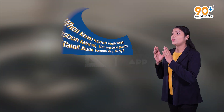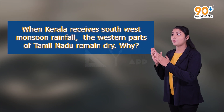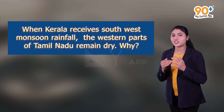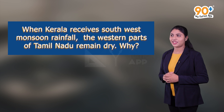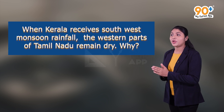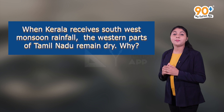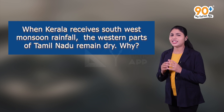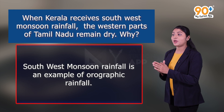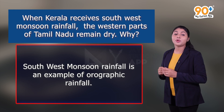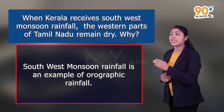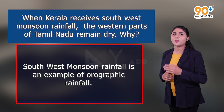Now let's discuss a related question: when Kerala receives south west monsoon rainfall, the western parts of Tamil Nadu remain dry — why? South west monsoon rainfall is an example of orographic rainfall.